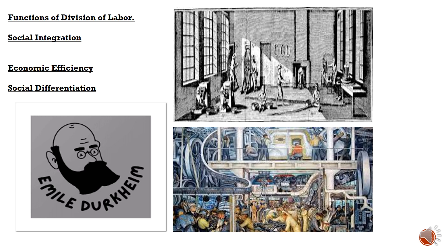Next is economic efficiency. Specialization within the division of labor enhances economic productivity and efficiency by allowing individuals to focus on tasks they are skilled at or have comparative advantage in. Division of labor maximizes output while minimizing resource wastage. For instance, in a factory setting, workers specialize in specific tasks like assembly, quality control, or logistics, leading to streamlined production processes and higher overall output. The last function of division of labor is social differentiation.